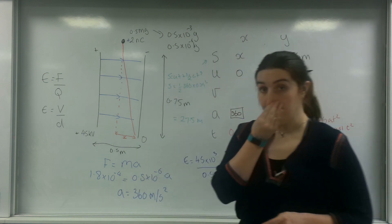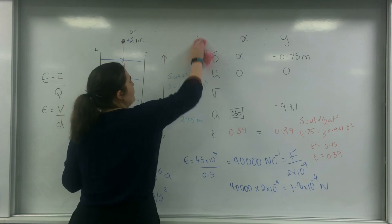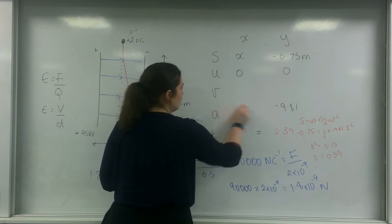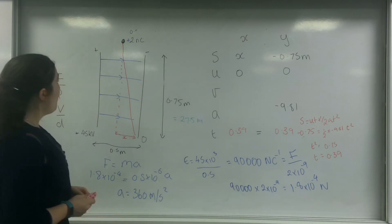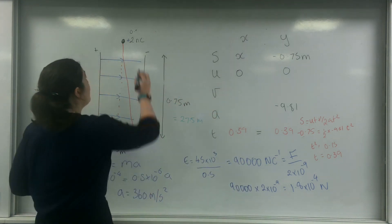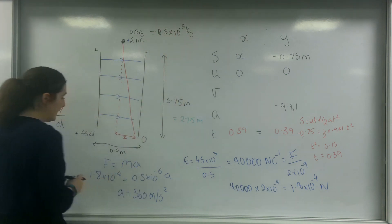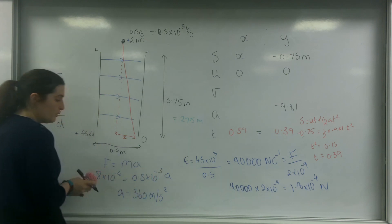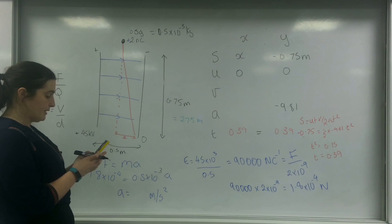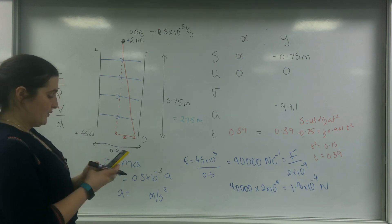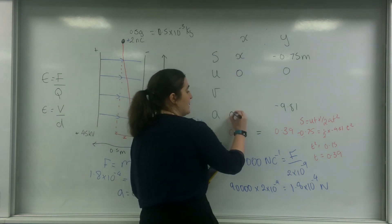So I'm going to slightly change it up — I'm going to make the mass 0.5 grams instead. Everything up to the force and field strength is exactly the same. But the acceleration changes: 0.5 grams is 0.5 times 10 to the minus 3 kilograms. So the acceleration is 1.8 times 10 to the minus 4 divided by 0.5 times 10 to the minus 3, which gives an acceleration of 0.36 metres per second squared.